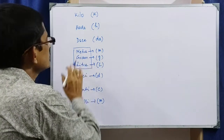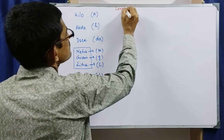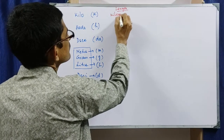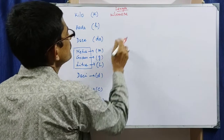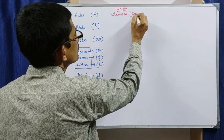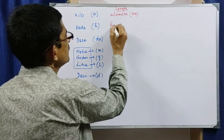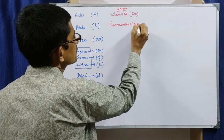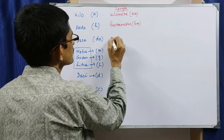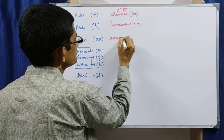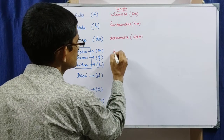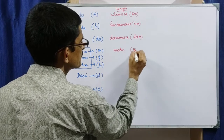Now, if we start with meter — that is, length — and write all lengths starting from the bigger part: kilometer, written in symbols as km (small k, small m). Similarly, hectometer written as hm, decameter written as dam, and meter written simply as m.